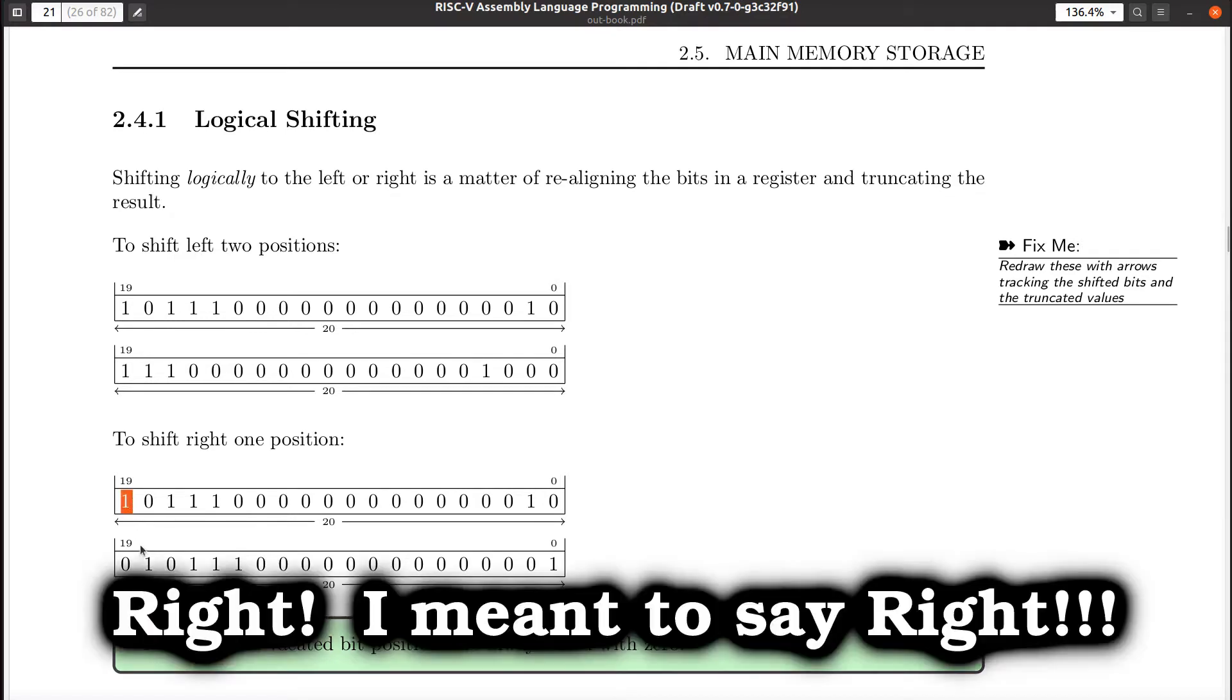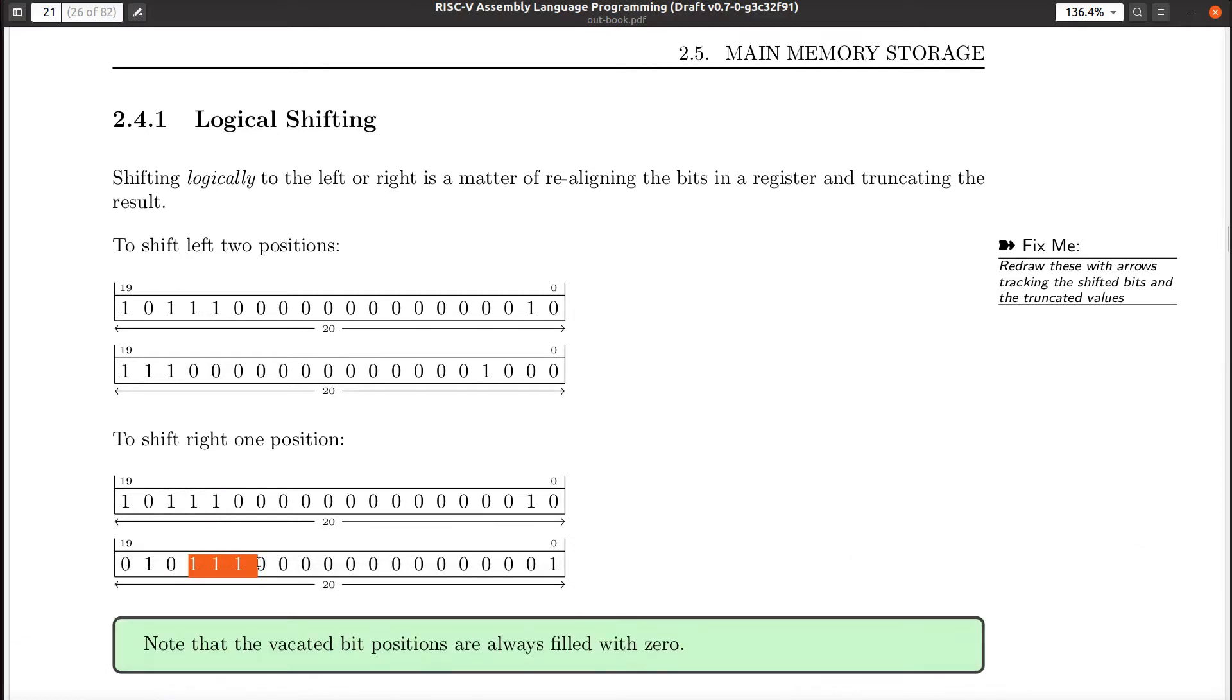Okay? The one bit here, you can see shifts to the left one. There's zero here, shifts left one. This guy, these three bits here end up getting shifted to the right one and end up there. Okay? That's really all there is to logical shifting left and right.